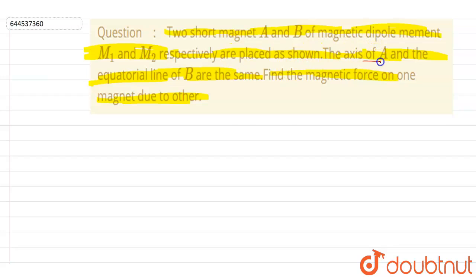So if you see, the axis of A is the equatorial line of B. It is given that the magnetic moment of the two is this, and they are all in the same plane. So if I write down, let's say this is B.